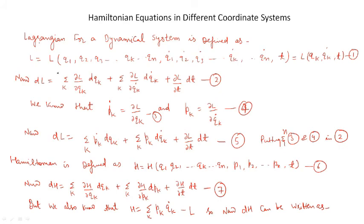Now if we take the exact differentiation of equation number 1, then we can write dL equal to sigma_k (del L / del qk) dqk plus sigma_k (del L / del qk_dot) dqk_dot plus (del L / del t) dt. Let us say it is equation number 2.